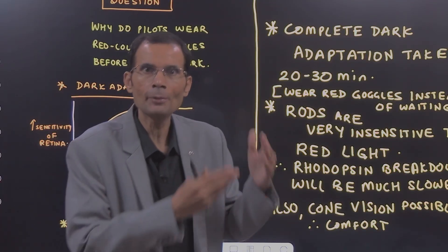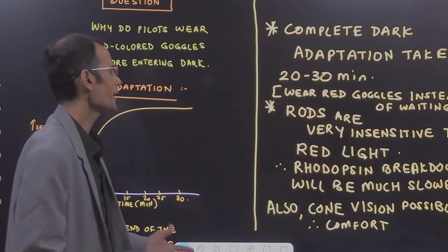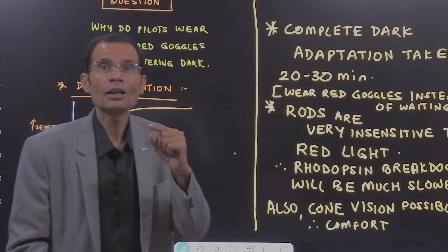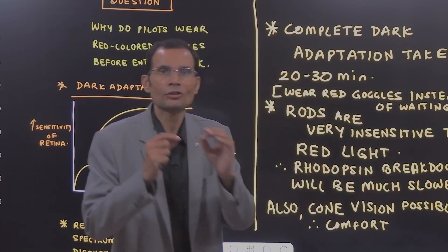That rhodopsin which is being made available in the darkness will also be utilised. There will be breakdown of rhodopsin but if you use red coloured goggles then the rhodopsin breakdown will be much slower.